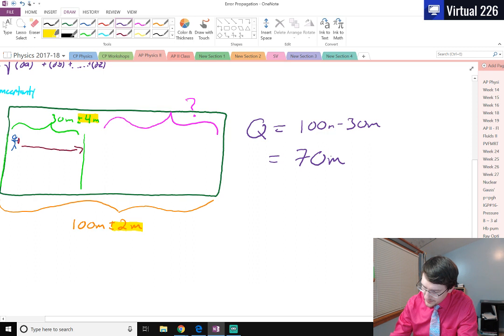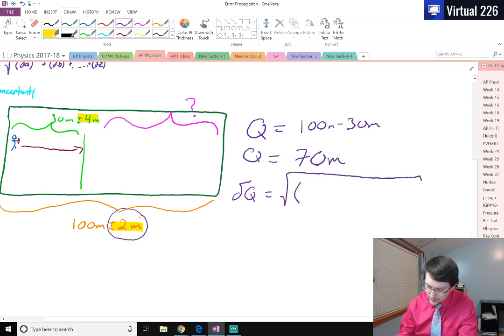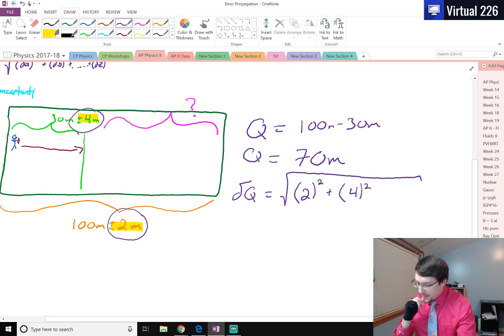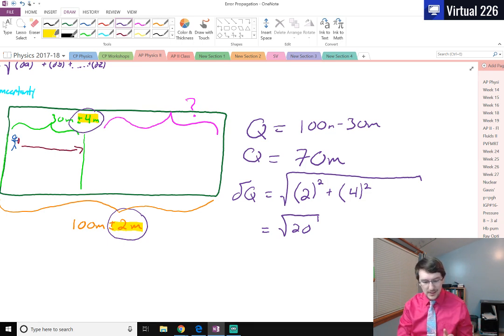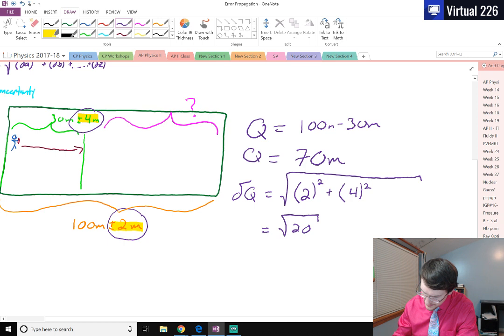To get the deviation in Q, we have to add up in quadrature all of the uncertainties. That gives us the square root of, well, here's one of our uncertainties, 2 squared, plus here's our other uncertainty, 4 squared. I know 4 squared is 16, 2 squared is 4, so del Q is going to equal the square root of 20. I pull out my trusty calculator, and we see that the deviation here is 4.47.